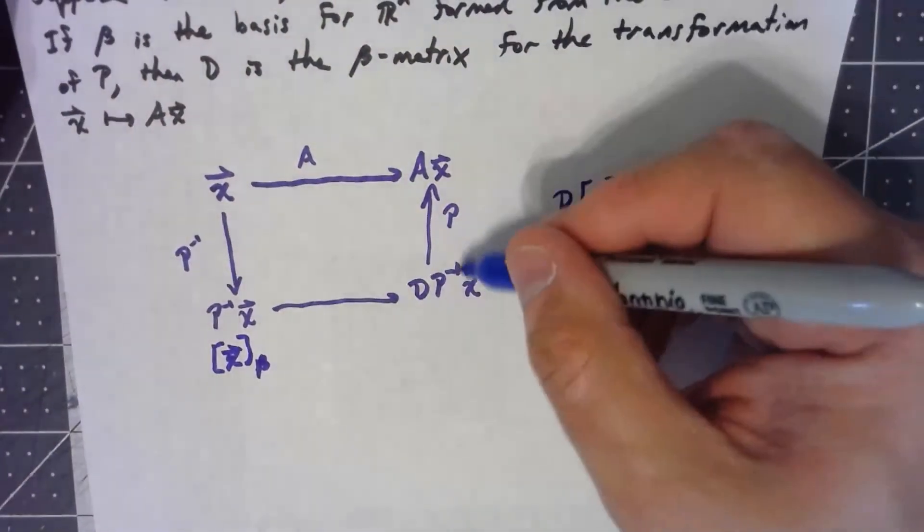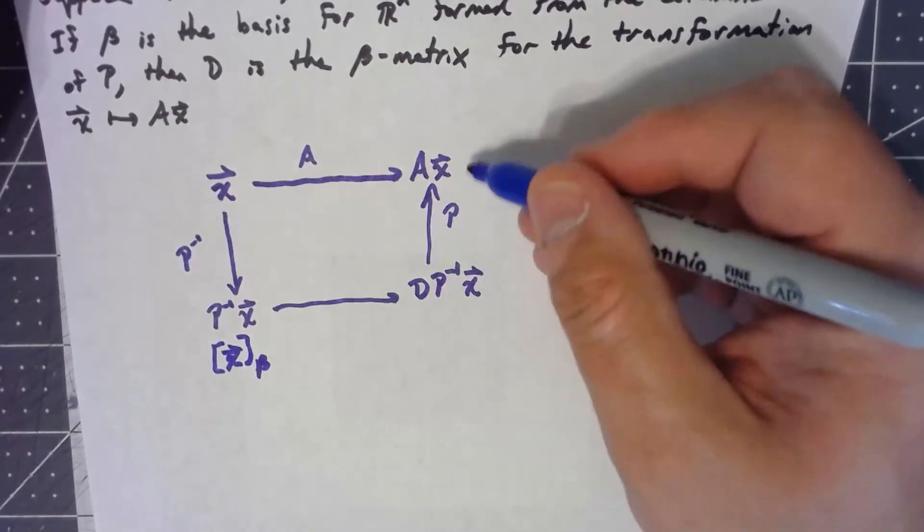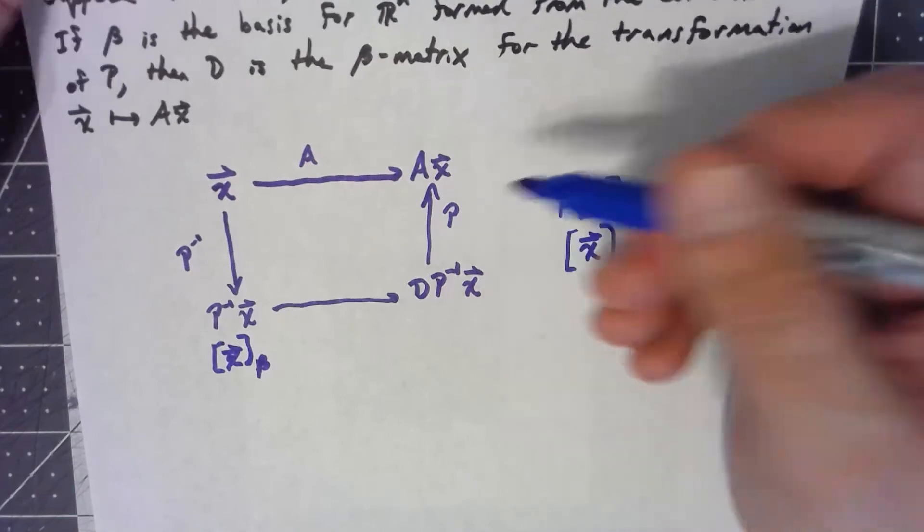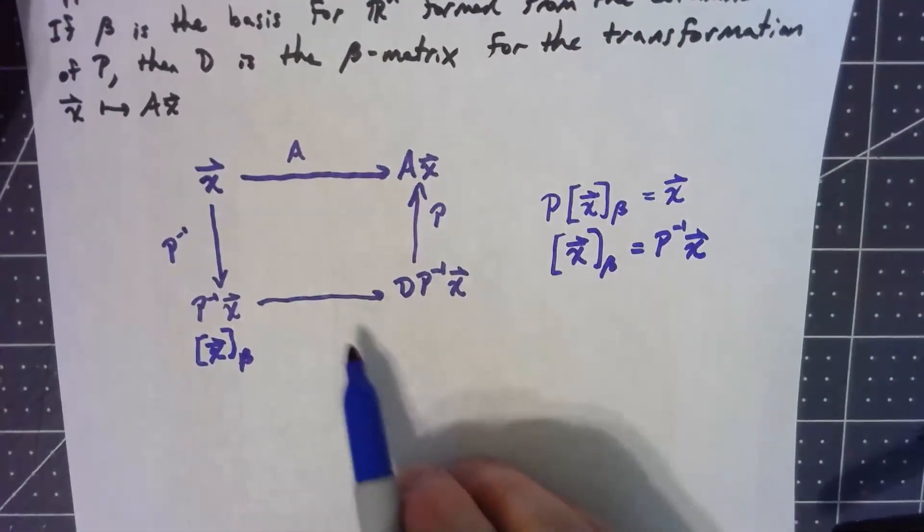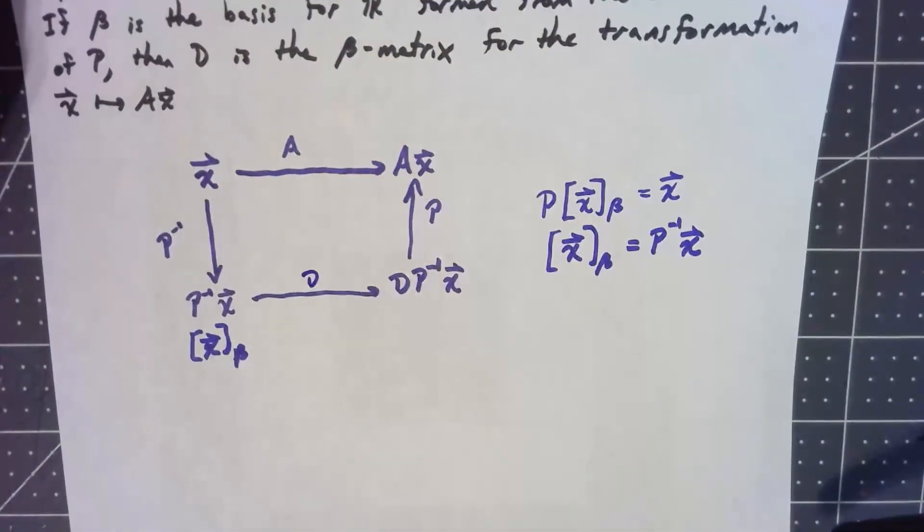Similarly, over here, we're uncoordinatizing this, changing it back to the original vector space. So the basic idea then, this thing here, this multiplication by D,